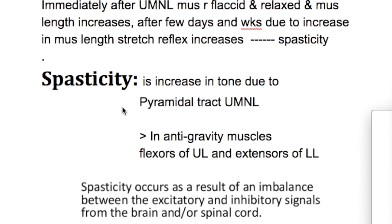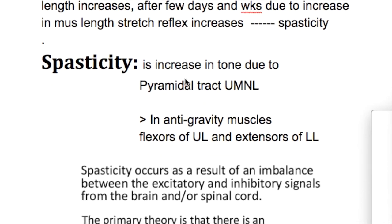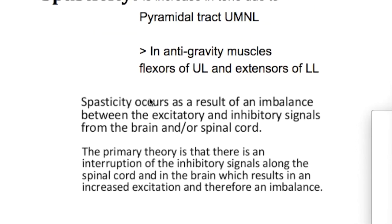Spasticity is increased tone due to pyramidal tract involvement. It is more prominent in anti-gravity muscles — that is, the flexors of the upper limb and the extensors of the lower limb.